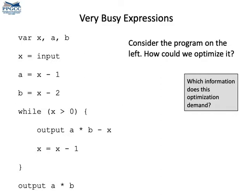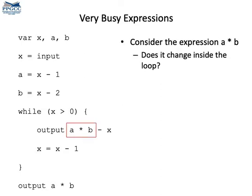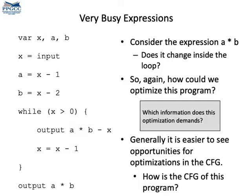To motivate its usage, I would like to show you this program. Can you think about ways to optimize it? Let me help you. Consider the expression A times B. This expression is loop invariant. I mean, it does not really change inside the loop. So, what could we do with it?